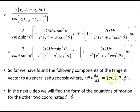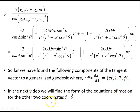We have the zeroth (t) and third (phi) components of the four-velocity. In the next video we will find the form of the equations of motion for the other two quantities, r dot and theta dot, which will be a bit more involved.